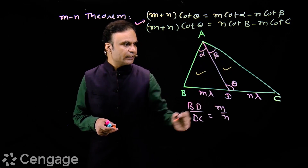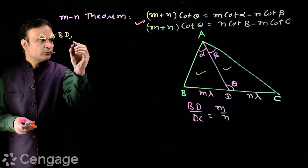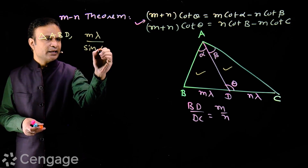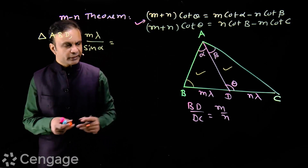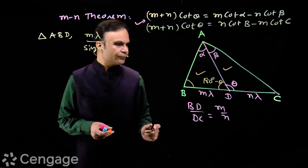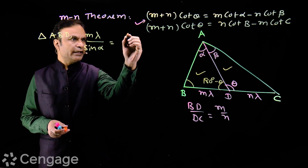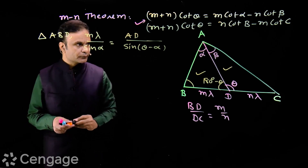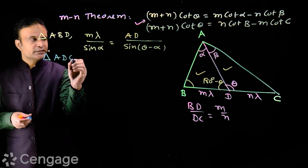In triangle ABD, using the sine rule, we have m·λ over sin alpha. Now, this angle — angle ADB — can be expressed as 180 degrees minus theta, so angle B equals theta minus alpha. Therefore we have AD over sin(theta minus alpha).